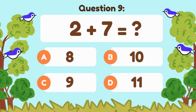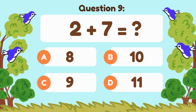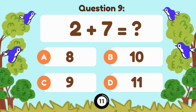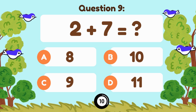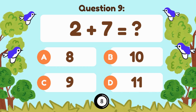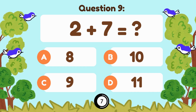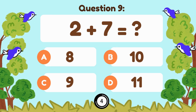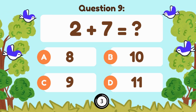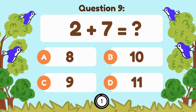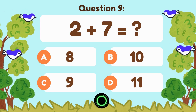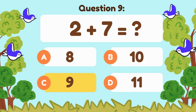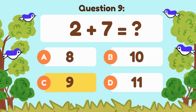2 plus 7 equals... 2 plus 7 is equal to 9.